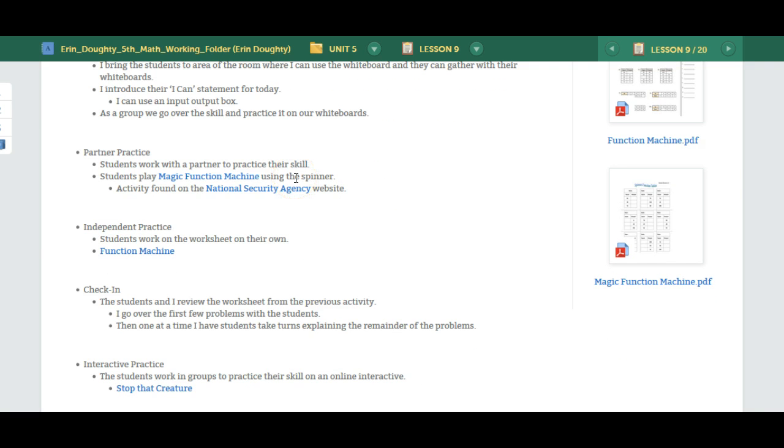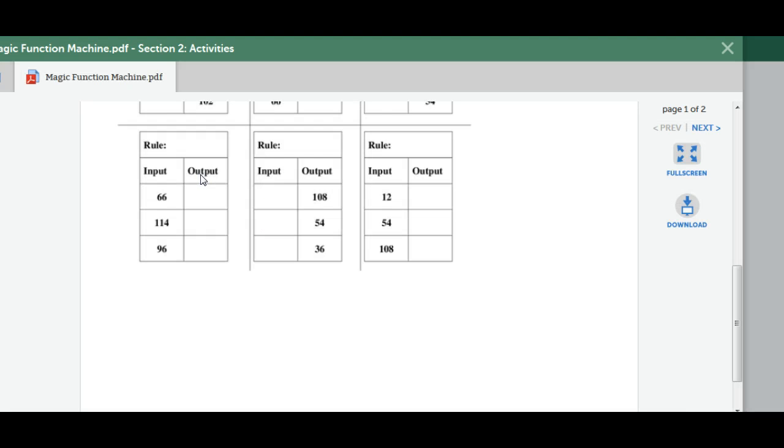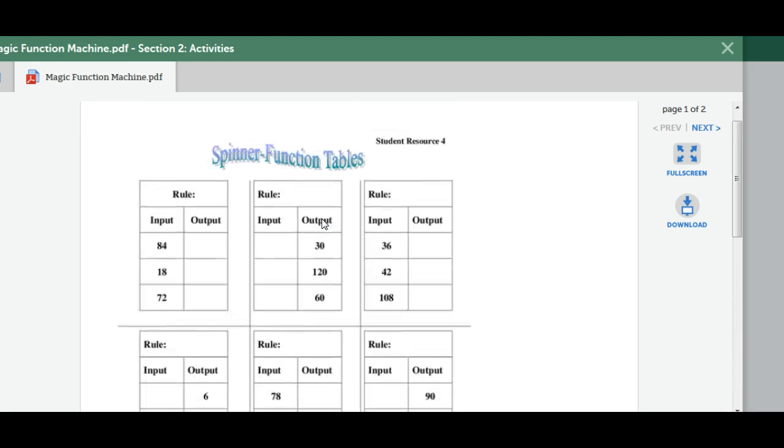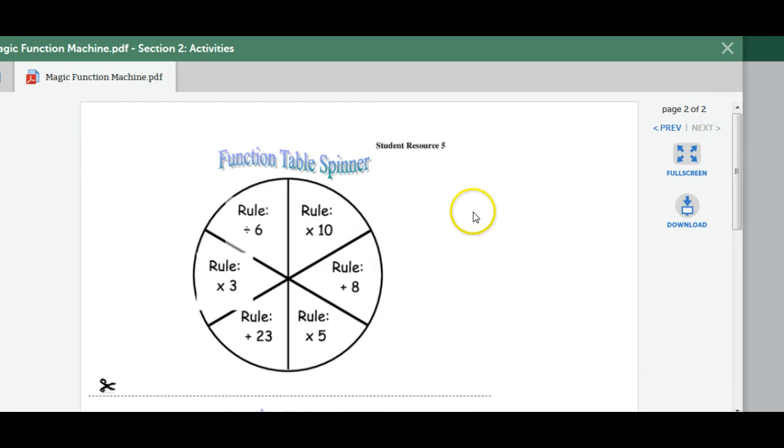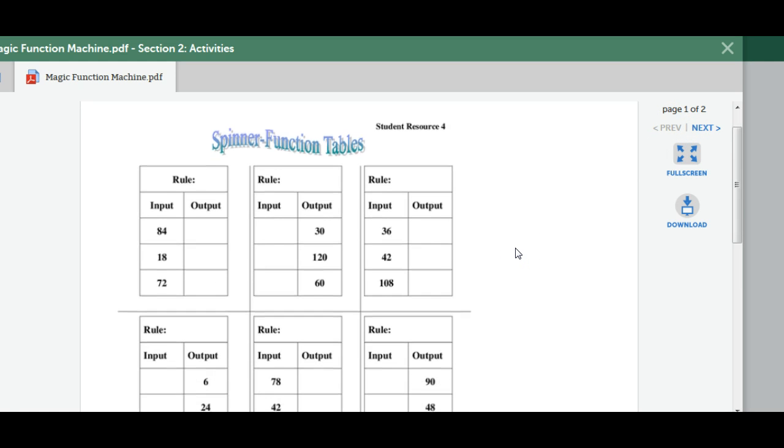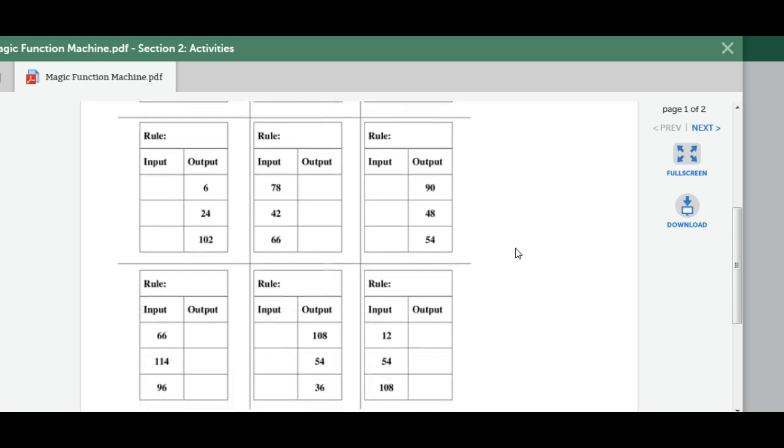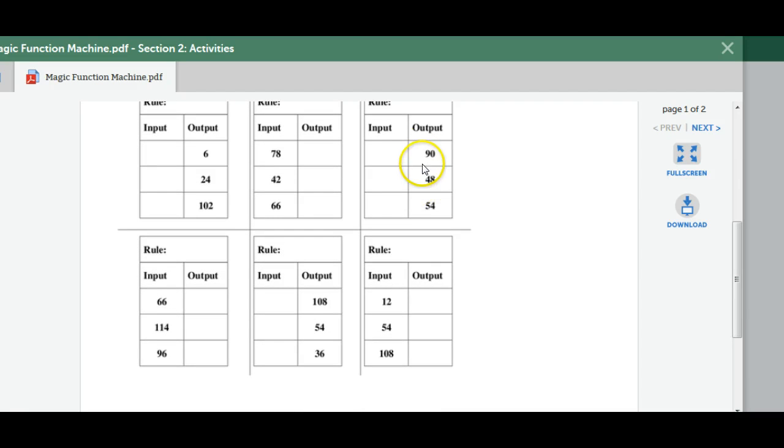On the second day they will be practicing with a partner and they will play a magic function machine. In this activity students will be creating a spinner and then it will determine their rule. Students will use that to complete the tables on the other sheet. So they're given either the input or the output and then based on the rule from their spinner they need to find the other one.